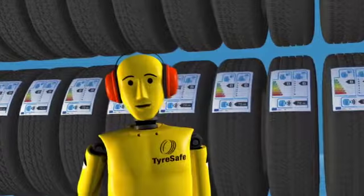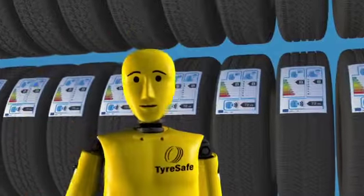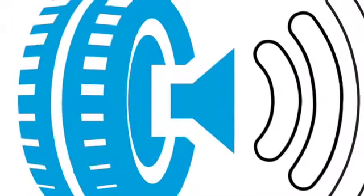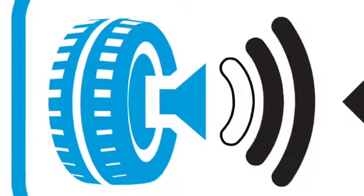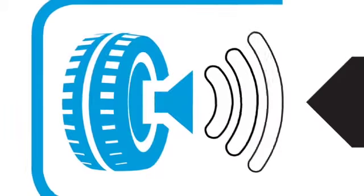And finally, exterior noise emissions. This is the external noise or sound pollution made by your tyres. Tyres will be rated in one of three categories.